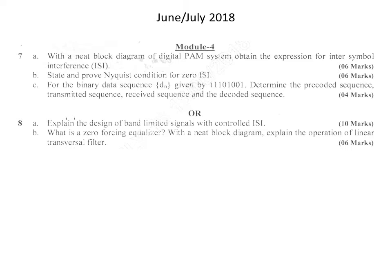The next question is: state and prove the Nyquist criterion for zero ISI. However, the syllabus clearly mentions that only the statement of the Nyquist criteria is included — the derivation is not included. So in this case, we just write the statement of the Nyquist criteria for zero inter-symbol interference.